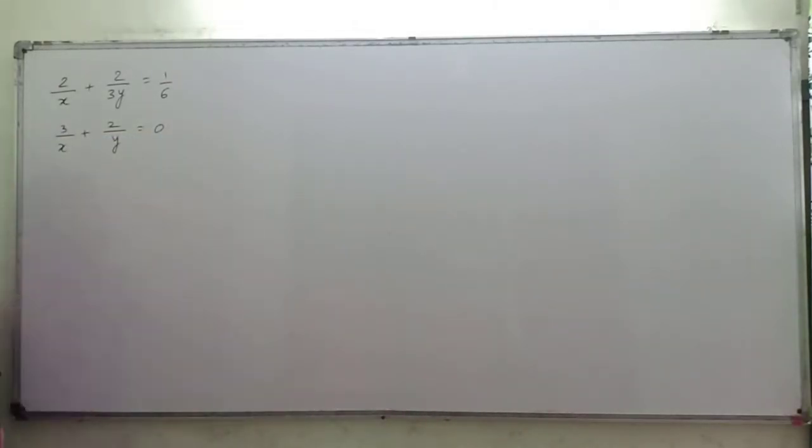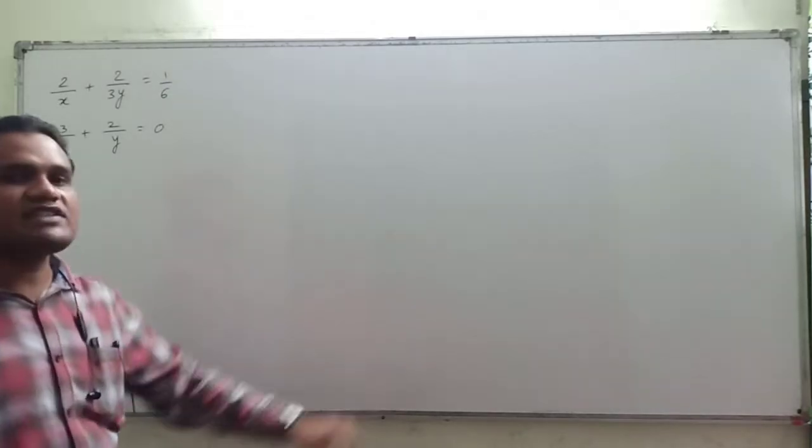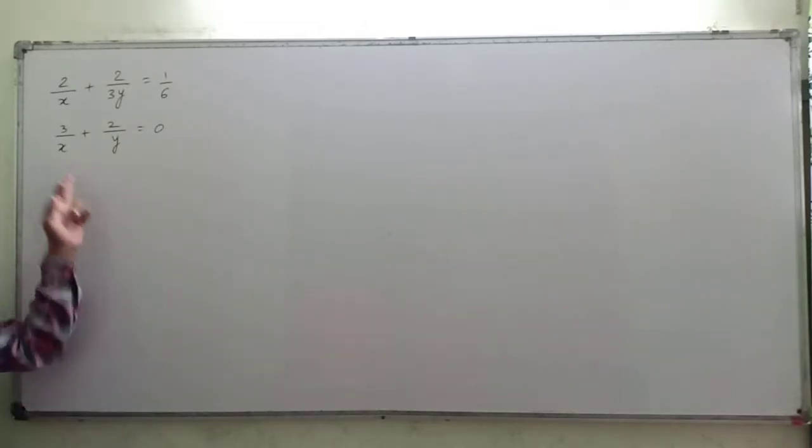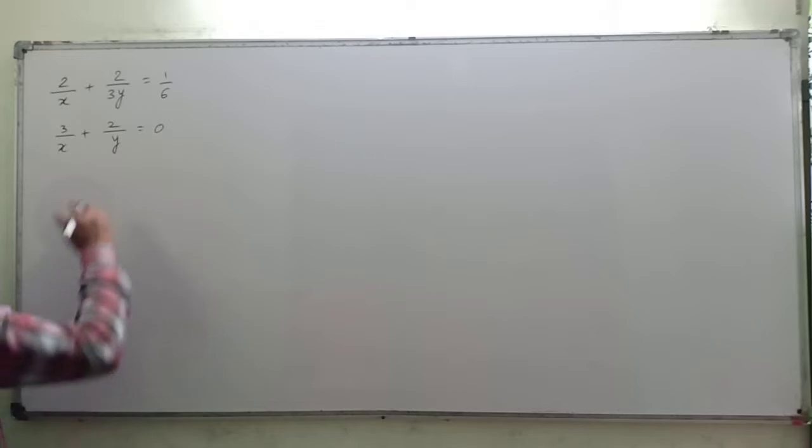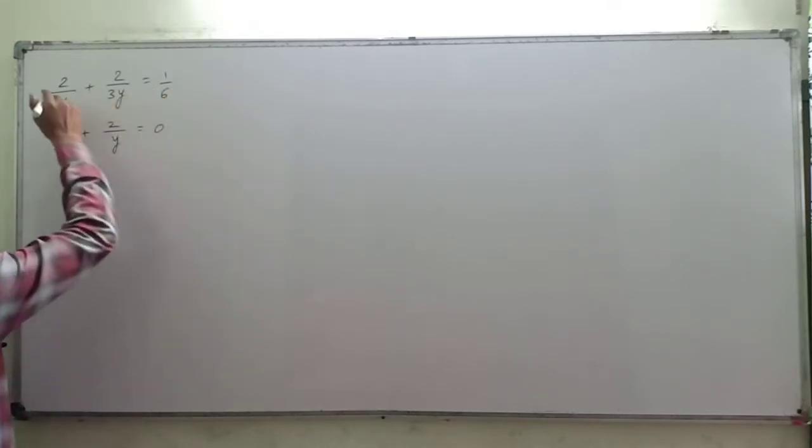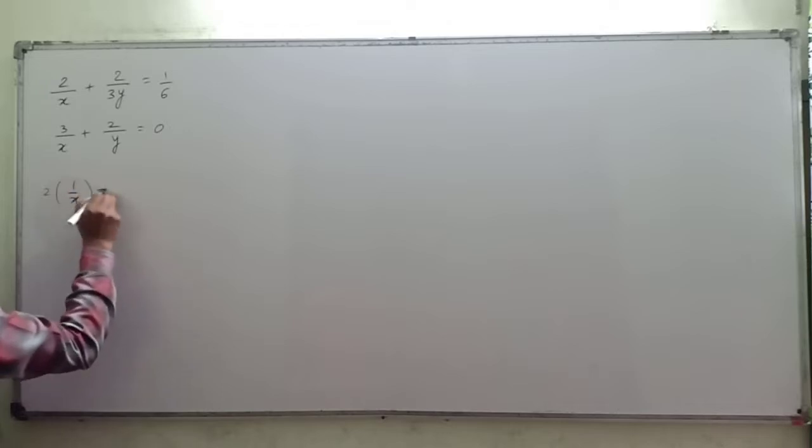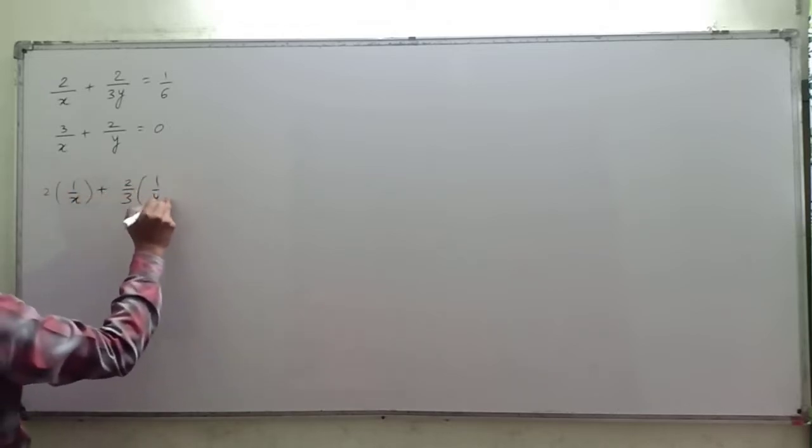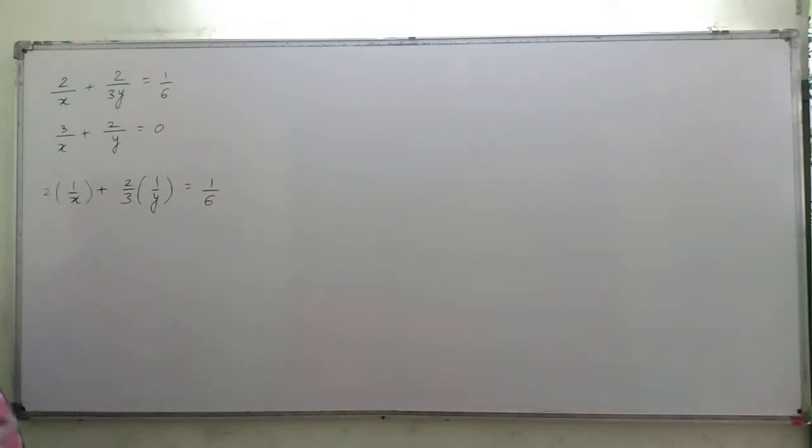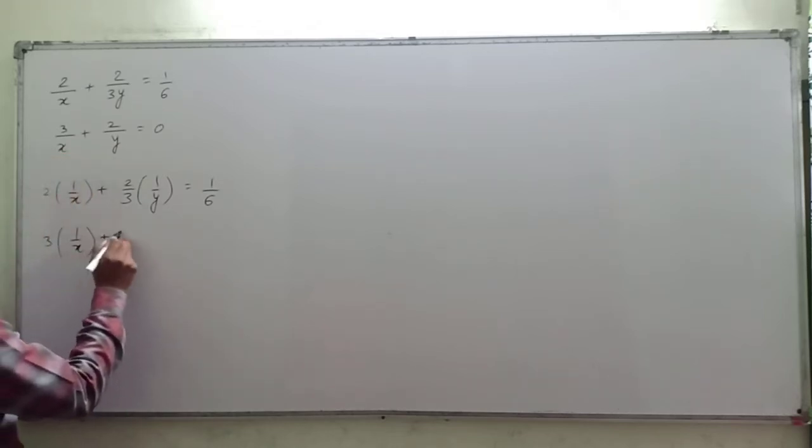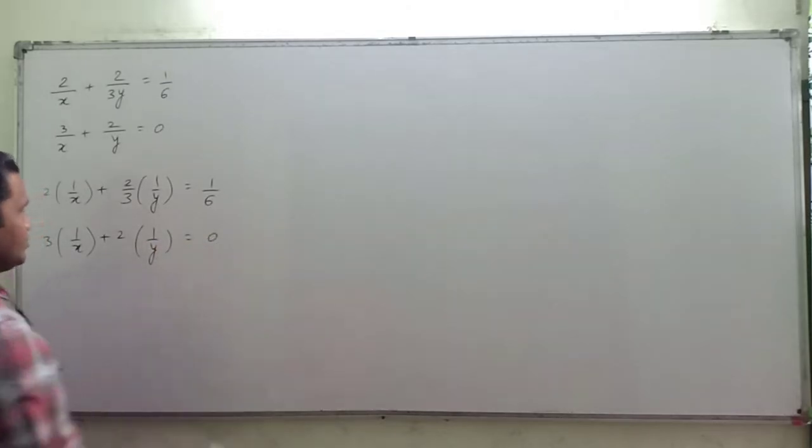I have already written one question from problem set one. As you see, the variables are given in the denominator position, so first we will rewrite the equations in a different way. This equation can be written as 2(1/x) + (2/3)(1/y) = 1/6, and the second equation as 3(1/x) + 2(1/y) = 0.